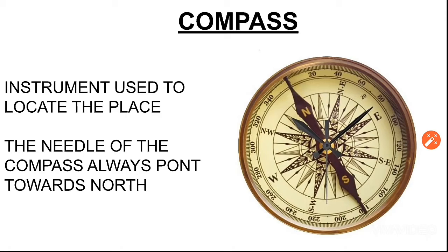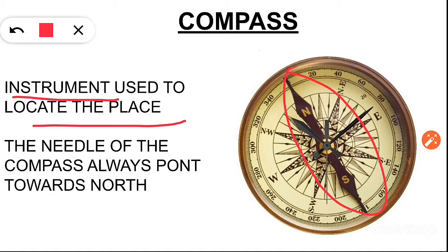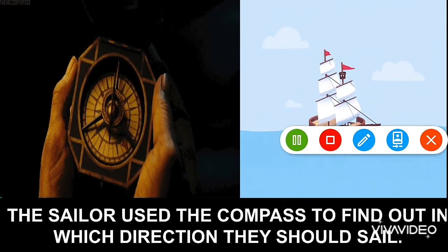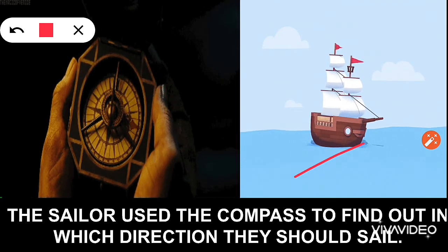The last topic is compass. As you can see on your screen, there is a diagram of a compass. It is an instrument which is used to locate a place. The needle that you can see always points towards the North side. The compasses are mainly used by the sailors to find out in which direction they should sail.